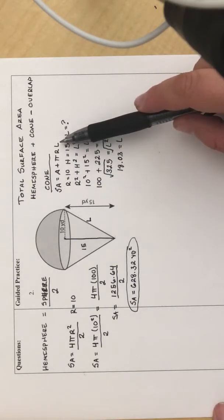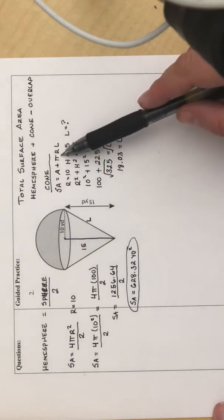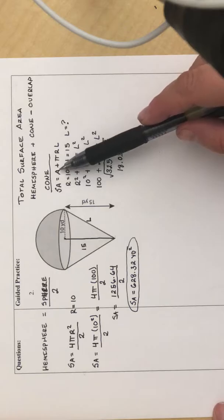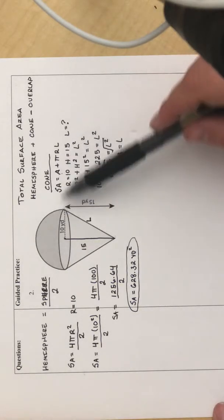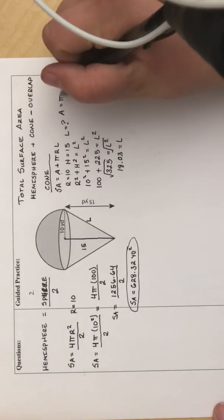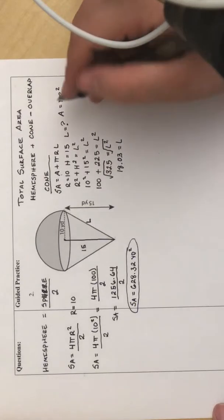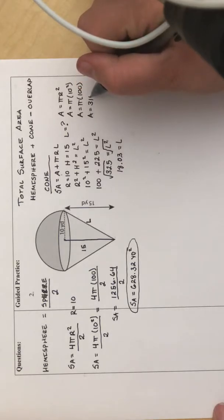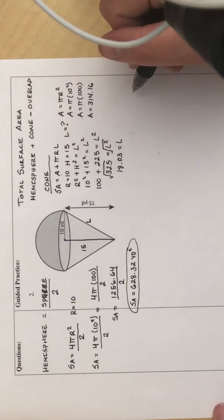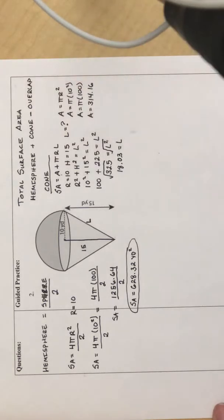So again, to find the surface area, I need L, which I just found. I need R, which I already said was 10. And so the last thing I need is A. When it talks about A for the cone, it's talking about the area of its base. The base is a circle, and to find the area of a circle, I use pi r squared. I already said that r is 10, so I'm going to plug that in. And 10 squared is 100, so that's going to be 314.16. So now I have everything that I need in order to find the surface area of that cone.